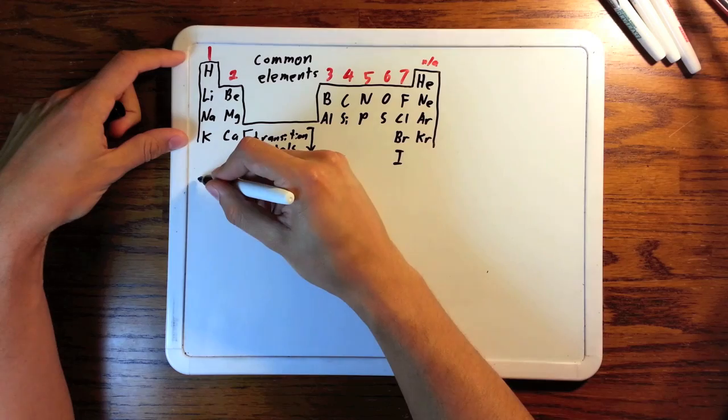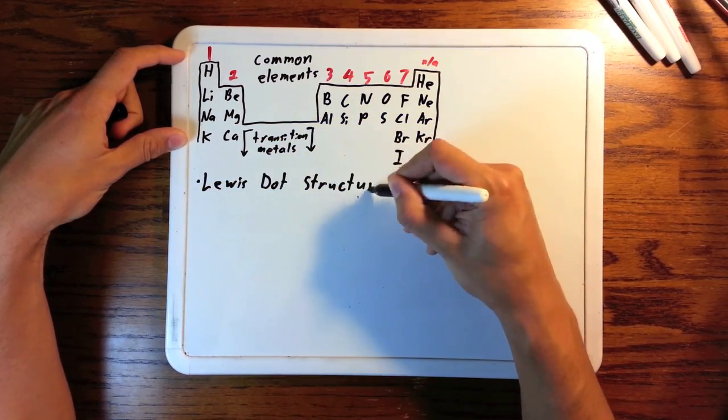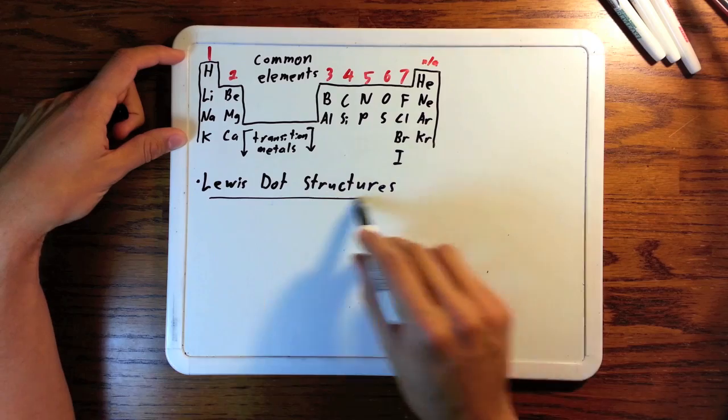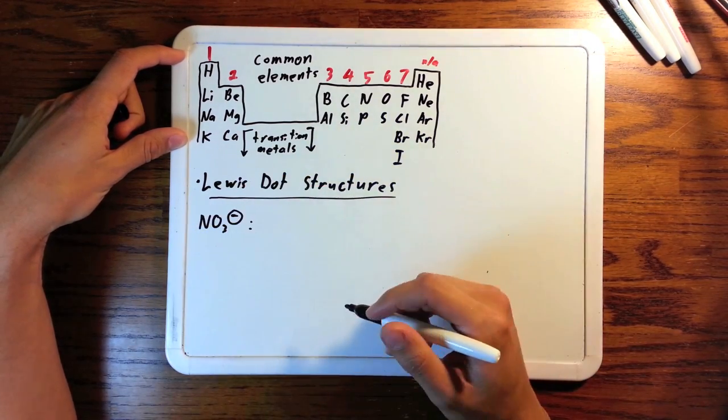Above each column is the number of electrons each element has in its valence shell. So if each element in a molecule has that many electrons around it, it is neutral.